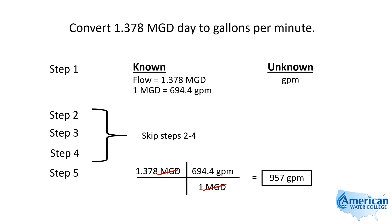I'm going to leave it up to you which way you want to do this problem, but as you get up into the higher levels of math, using 694.4 gallons per minute equivalent to 1 MGD will be helpful. So I wanted you to see that now.